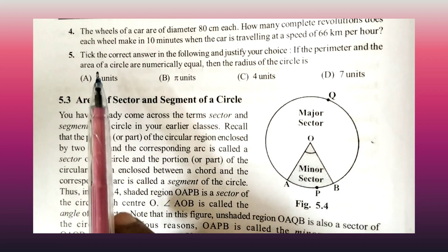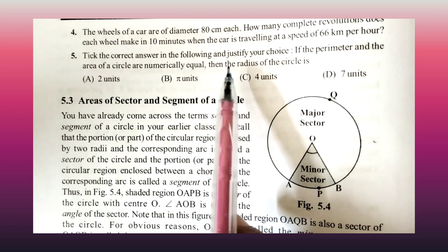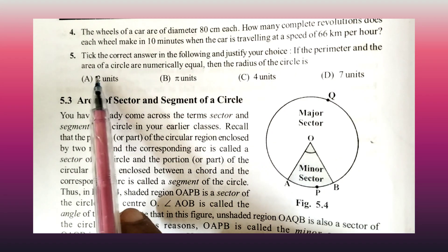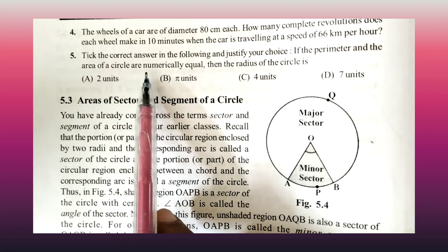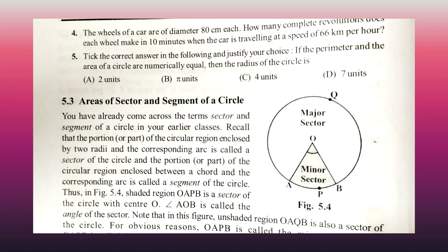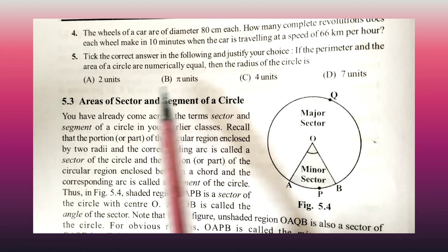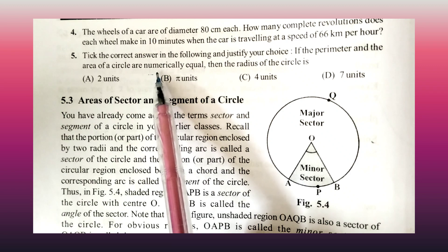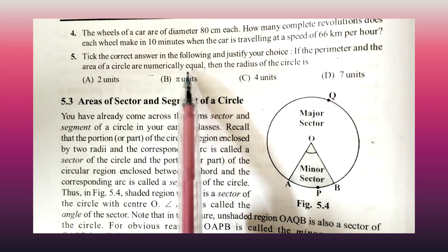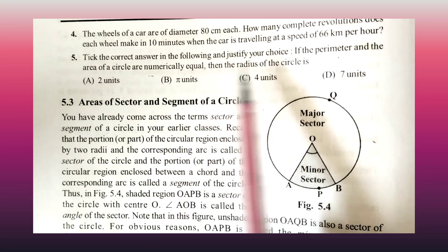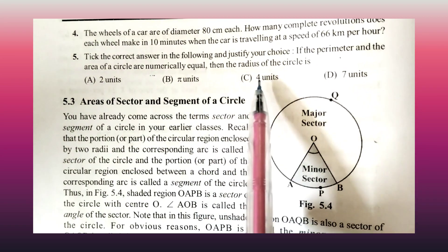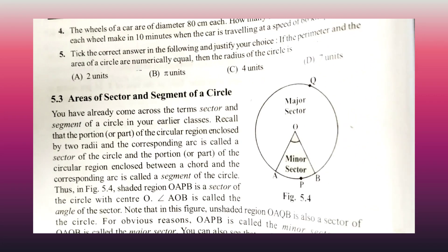Now for the fifth question: take the correct answer and justify your answer. If the perimeter and the area of the circle are numerically equal, then the radius of the circle is — 2 units, 5 units, 4 units, or 7 units?